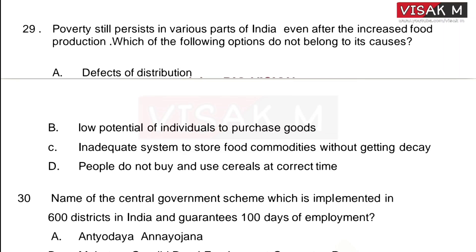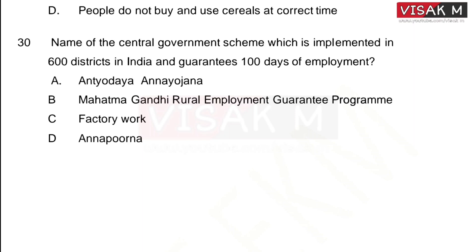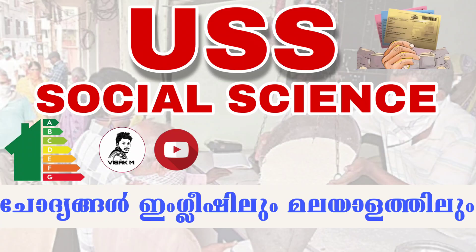Moving on to the last and final question of this video: name the central government scheme which is implemented in 600 districts in India and guarantees 100 days of employment. If you are interested in this video, please share and subscribe to our channel, and press the notification bell. Thank you.